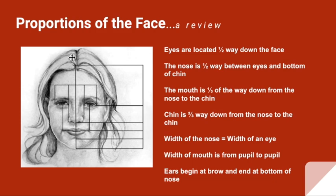The first thing is that the eyes are located halfway down the face. The nose is located halfway between the eyes and chin. The mouth is a third of the way down. The chin is two-thirds of the way down from the nose to the chin.